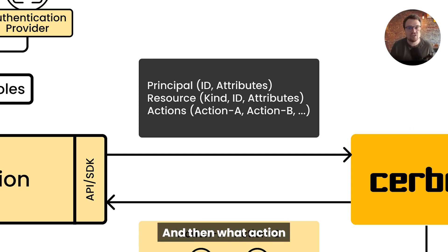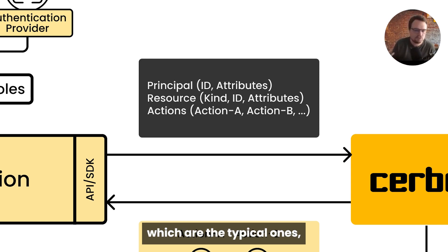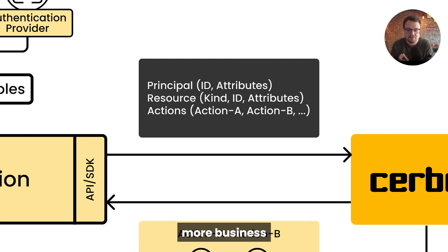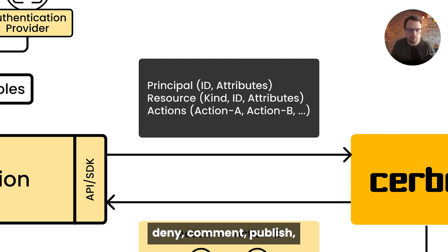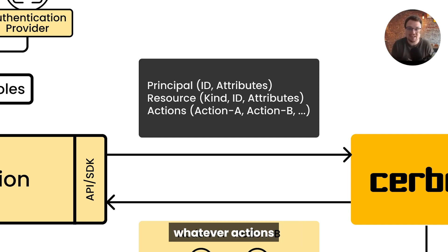And then what action is the user trying to do? Are they trying to create, read, update, delete, which are the typical ones, but you can get into much more business-specific examples. So are they trying to approve, deny, comment, publish — whatever actions are relevant to your system?